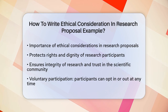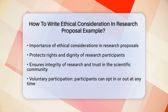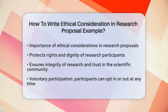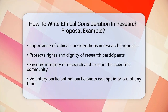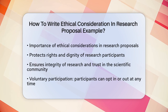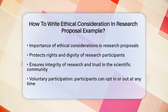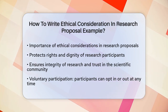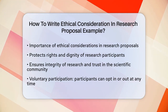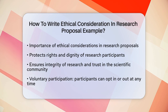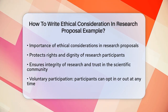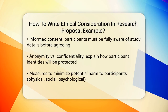Voluntary Participation and Informed Consent. When writing your proposal, you need to explain how you will ensure that participants can opt in or out of the study at any time — this is known as voluntary participation. You also need to detail how you will obtain informed consent from your participants, meaning they must be fully aware of the purpose, benefits, risks, and funding behind the study before they agree or decline to join.